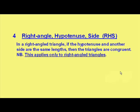It says that in any right angle triangle, if the hypotenuse and another side are the same lengths, then the triangles are congruent. But it only applies to right angle triangles, so let's see what that means.